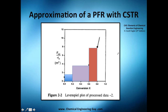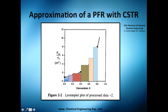What happens if we have three? Each time the excess volume goes lower and lower. Now with six CSTRs, we have almost no excess volume. It keeps getting lower and lower, and hopefully you're getting the idea.